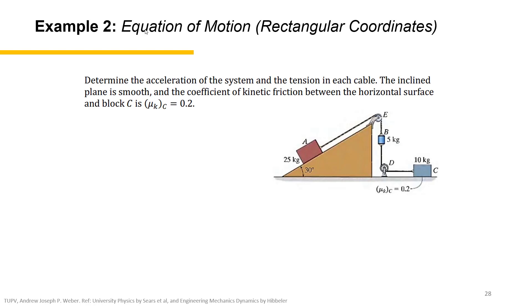So for our second problem, let's read the problem. Determine the acceleration of the system, because block A, the cylinder B, and block C are all interconnected by a cable. So the question is the acceleration of the system and the tension in each cable. The inclined plane is smooth and the coefficient of kinetic friction between the horizontal surface and block C is 0.2.